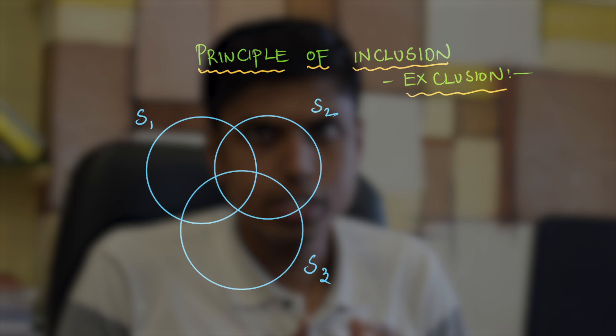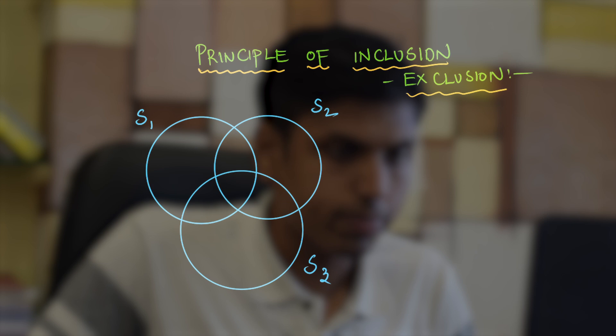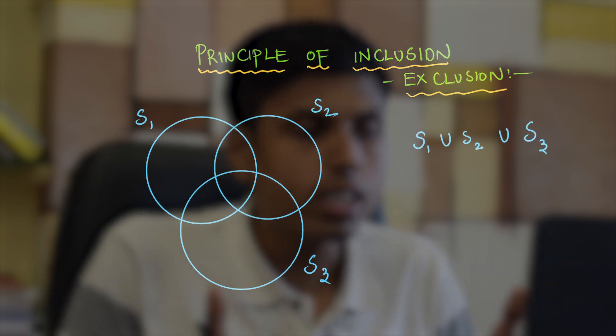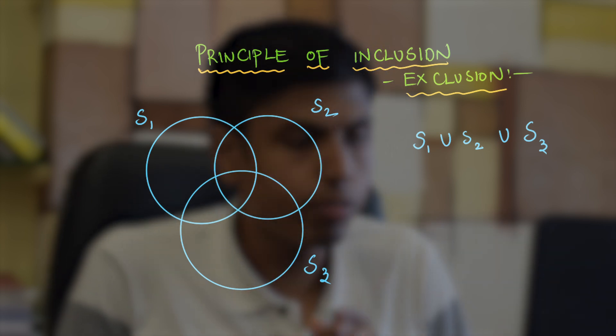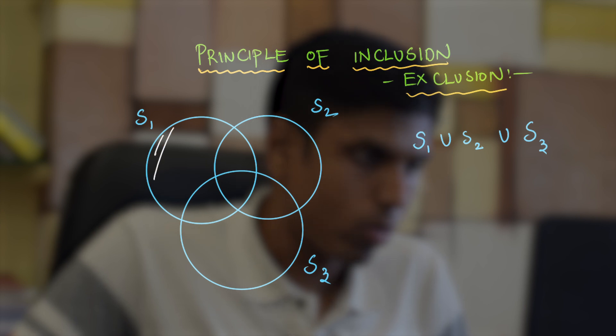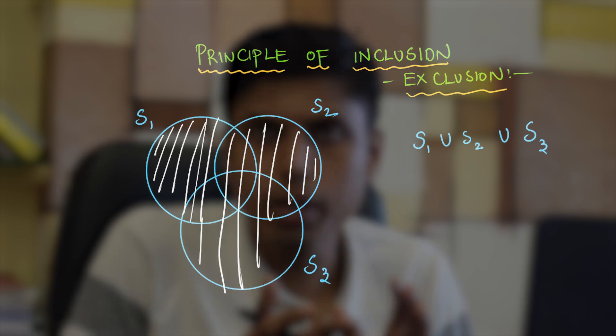Now the usual question would be to count the number of elements in the union of all these three sets. What is the meaning of union? It is just the collection of all elements that belong to at least one of these sets. Here we have S1, S2, S3 under consideration. So according to the diagram, union is represented as the number of elements in the shaded part.